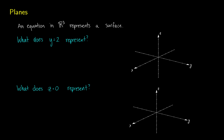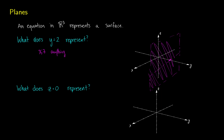Let's talk about equations — they're really just a set or surface of points. When we say what does y = 2 represent, we're saying that x and z can be anything. We're specifying a specific value for y but no restriction on x and z, so what this gives us is a plane — a plane where y equals 2 and x and z can be whatever values they want.